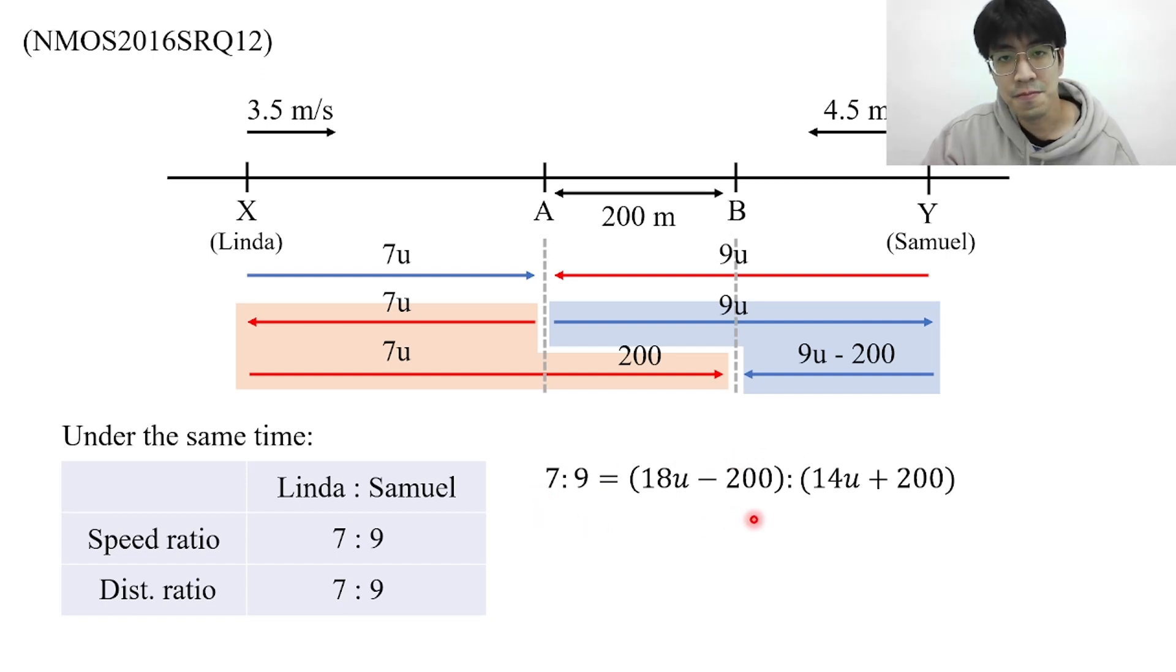We can use the property of the ratio which says that the product of the middle two numbers, which we call the means, would always equal to the product of the outer two numbers, which we call the extremes. So we can take the product of these two numbers equal to the product of these two numbers and then we will get this equation. Now it is fairly simple to solve for u and I believe you can do that. You'll find that u is equal to 50 meters.